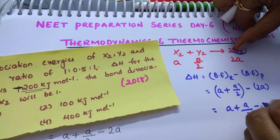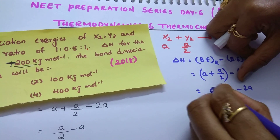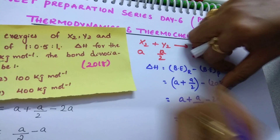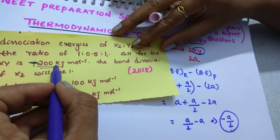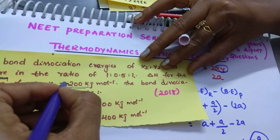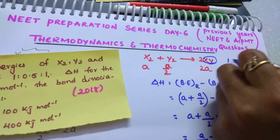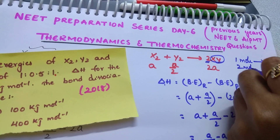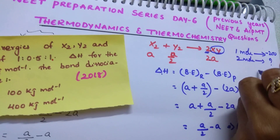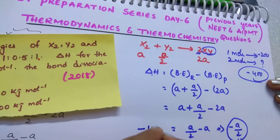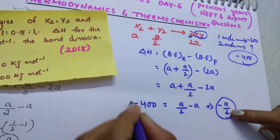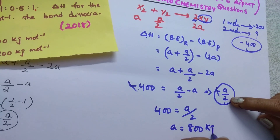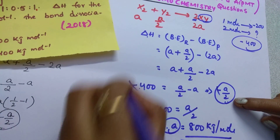Delta H equals bond dissociation energies of reactants minus products. So A plus A by 2 minus 2A gives minus A by 2. Delta H for 1 mole of XY formation is minus 200 kJ, so for 2 moles it is minus 400 kJ. Then minus 400 equals minus A by 2, so A equals 800 kJ per mole. This is the bond dissociation energy of the X2 bond.